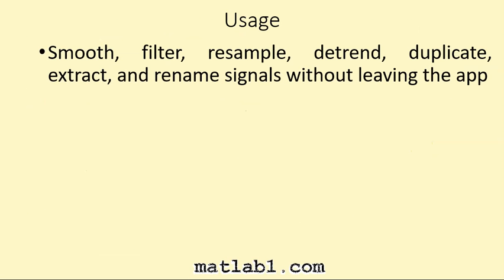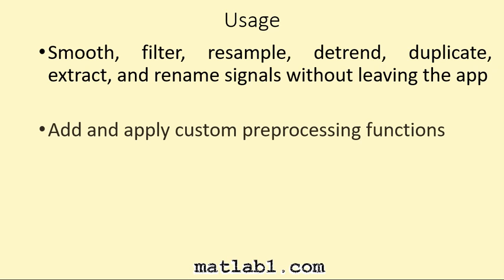You can smooth the signal, apply a filter — low pass, high pass, or bandpass — perform resampling and trending, duplicate the signal, or extract a signal from a longer signal. For example, if you have a long time-domain signal and need only a part of it, you can extract that portion. You can also rename a signal or apply custom pre-processing functions.